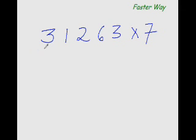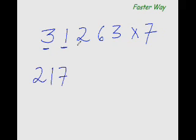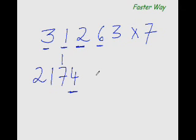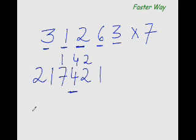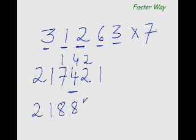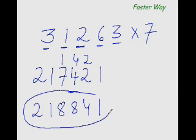From left to right, multiply each digit by 7: 3×7 is 21, 1×7 is 7, 2×7 is 14 — but only one digit can go here, so carry forward 1 and write 4. 6×7 is 42, so write 4, 2. 3×7 is 21, write 2, 1. Now add all the numbers: 2, 1+7 is 8, 4+4 is 8, 2+2 is 4, and 1. That's the answer.